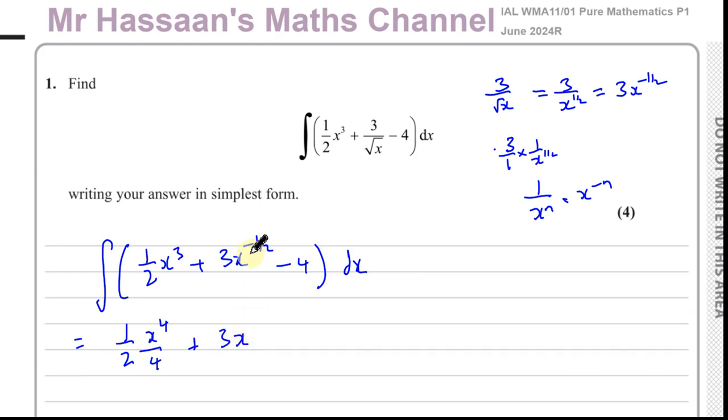Plus 3x to the power of, you add 1 to negative a half gives you positive a half. It's like minus a half plus 2 over 2, which is 1 over 2. Then you divide by the new power, so you divide by a half, and any constant term just gains an x. So this 4 becomes 4x. And don't forget, if it's an indefinite integral like this, there's no limits here to put in. You must put plus c.